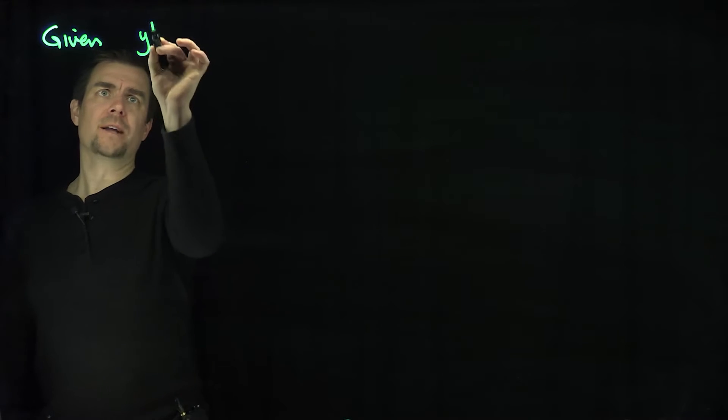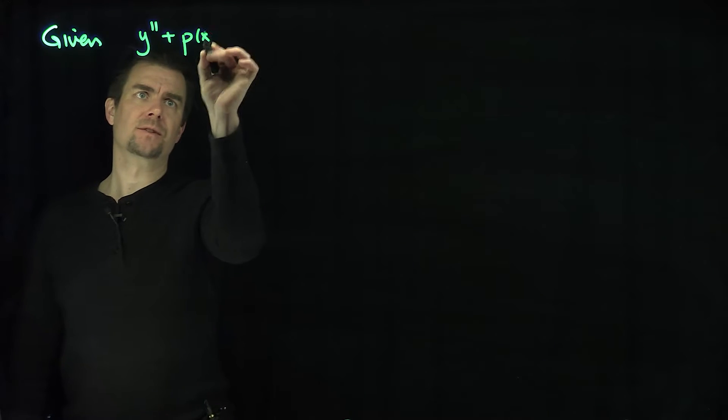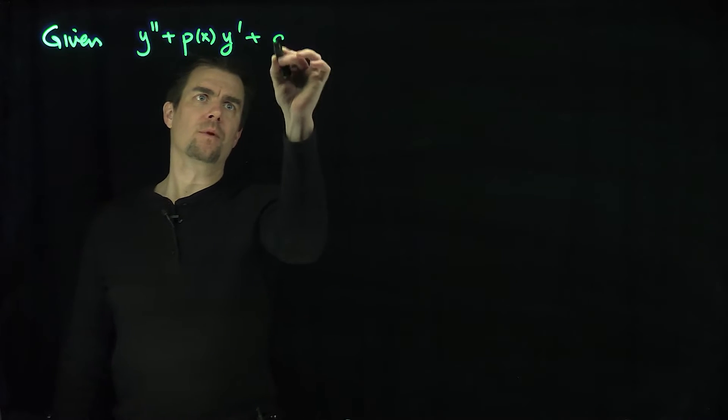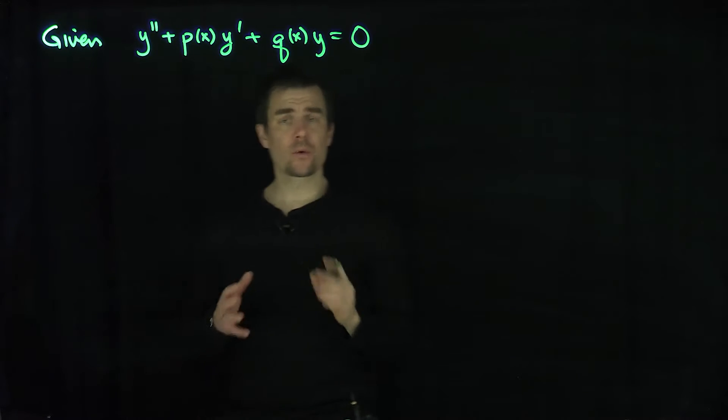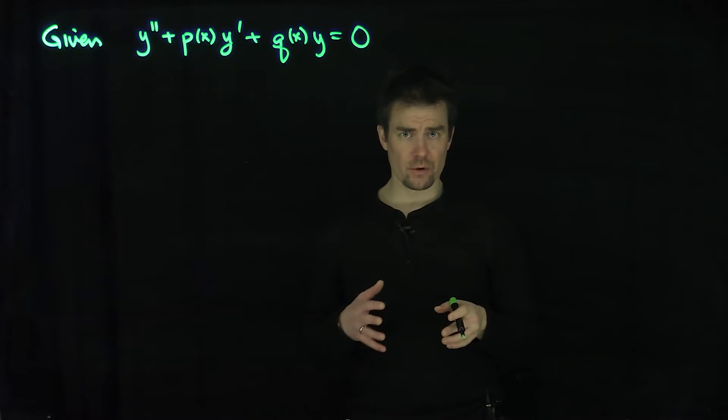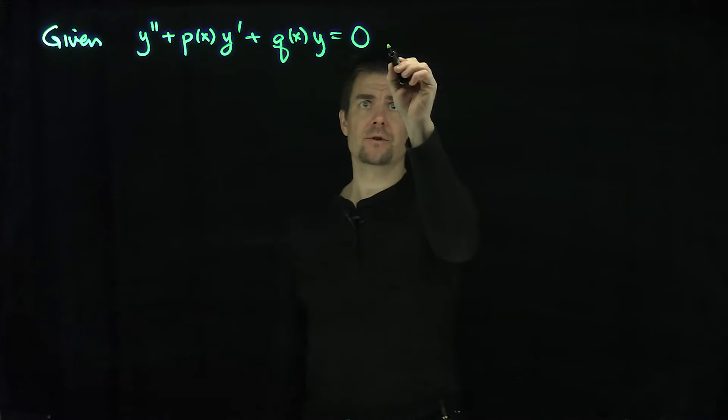So given y double prime plus p of x y prime plus q of x y equals zero, our second-order homogeneous linear differential equation, what I'm going to do is our standard trick.